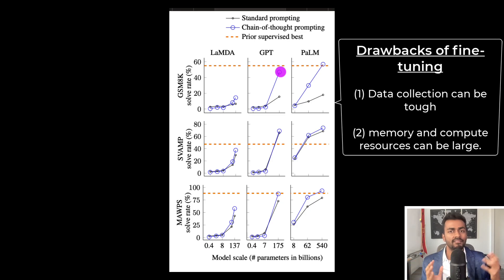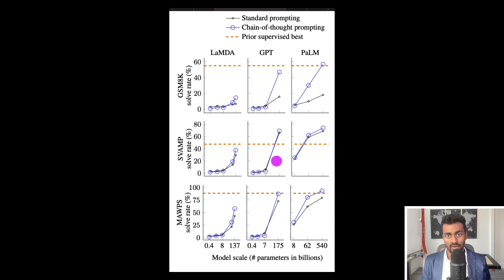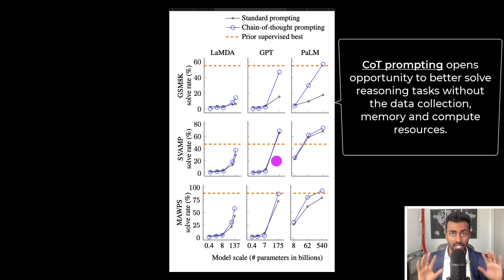And with fine tuning, we tend to have the drawback of typically just collecting data and also having the amount of space in compute in order to actually tune the model. But we can sidestep the entire thing with just taking the pretrained model, using few shot learning, and interjecting some rationale in a few of those prompts. And so chain of thought prompting opens a world of opportunity for reasoning tasks, while still using less compute and memory resources.